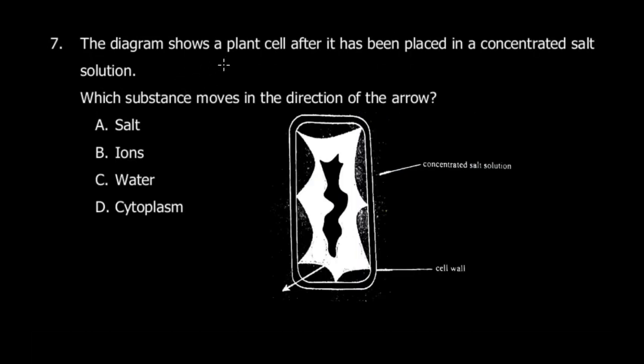Question seven: the diagram shows a plant cell after it has been placed in concentrated salt solution. Which substance moves in the direction of the arrow? You're thinking osmosis, which is correct. Concentrated salt solution has very little water compared to the cell, creating a diffusion gradient. Water would diffuse from high concentration to low concentration, so water moves out of the cell.